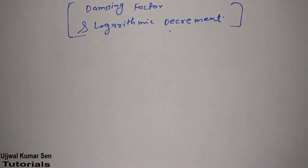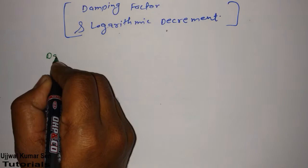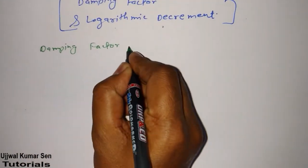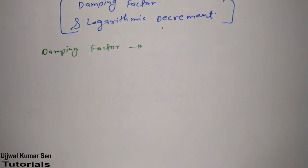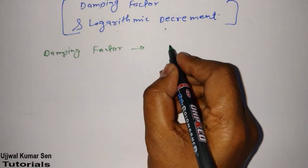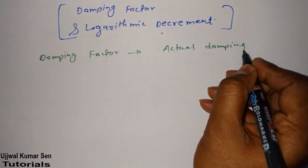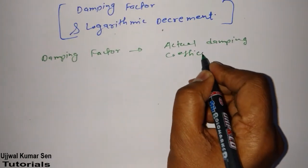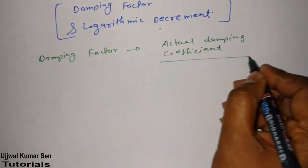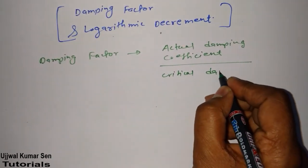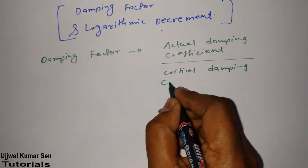Sounds cool? Now, let's go for it. First of all, damping factor. Damping factor. What is damping factor basically? You know, it is the ratio of actual damping coefficient divided by critical damping coefficient.